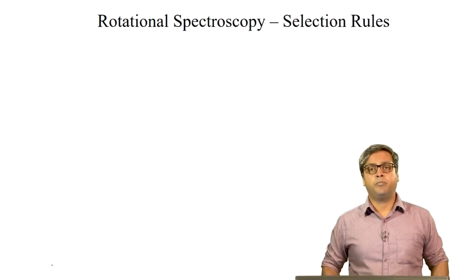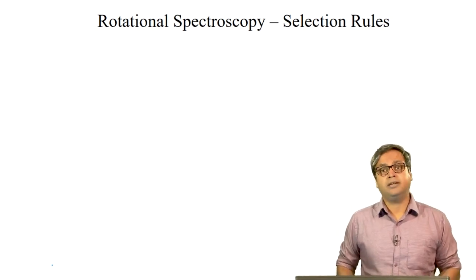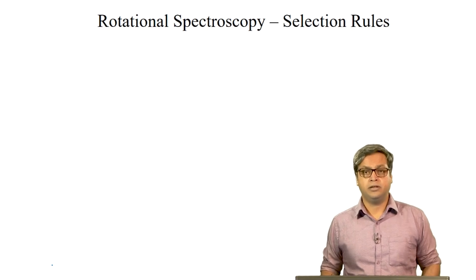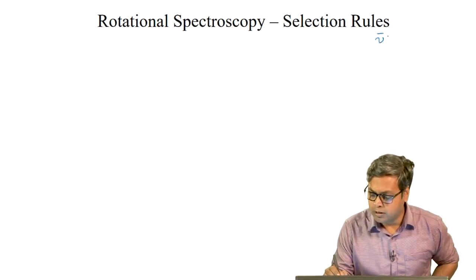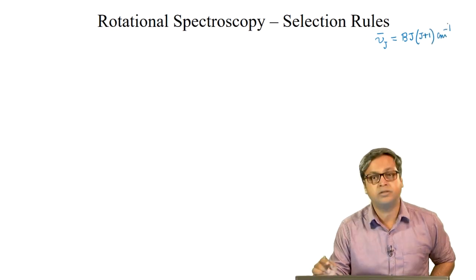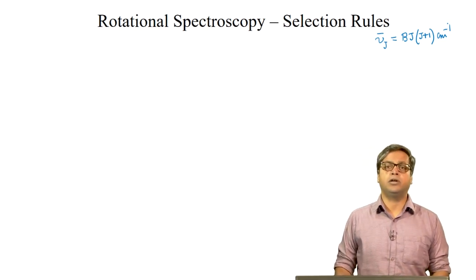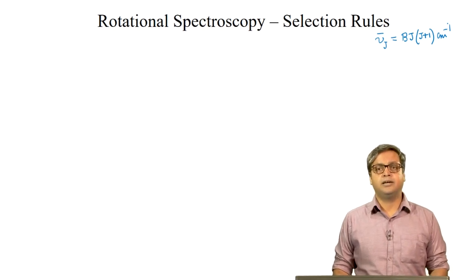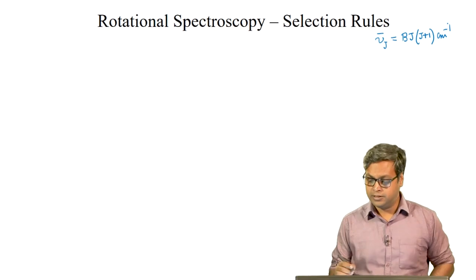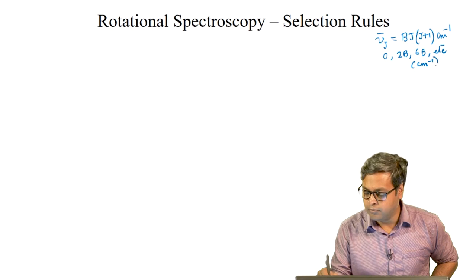In the last lecture, we obtained a physical understanding of the origin of rotational spectroscopy. We saw that the energy of the Jth level, nu-bar J, can be expressed as B times J times J plus 1 (in cm⁻¹), where B is the rotational constant and J is the rotational quantum number. The energies of the different rotational levels are 0, 2B, 6B, etc.